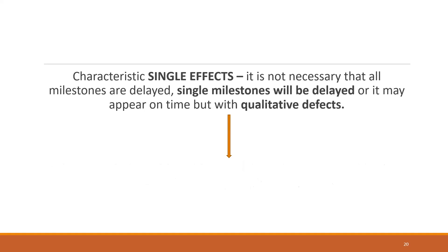It is not necessary that all milestones are delayed — single milestones will be delayed, or they may appear on time but with quality defects. For example, the child might start speaking on time, but instead of saying 'ma' or 'pa', he goes for slurring, non-syllables, or even just noises. So there's a qualitative defect in that particular milestone — it may have arrived on time but the quality is hampered. That can also be a Baryta.